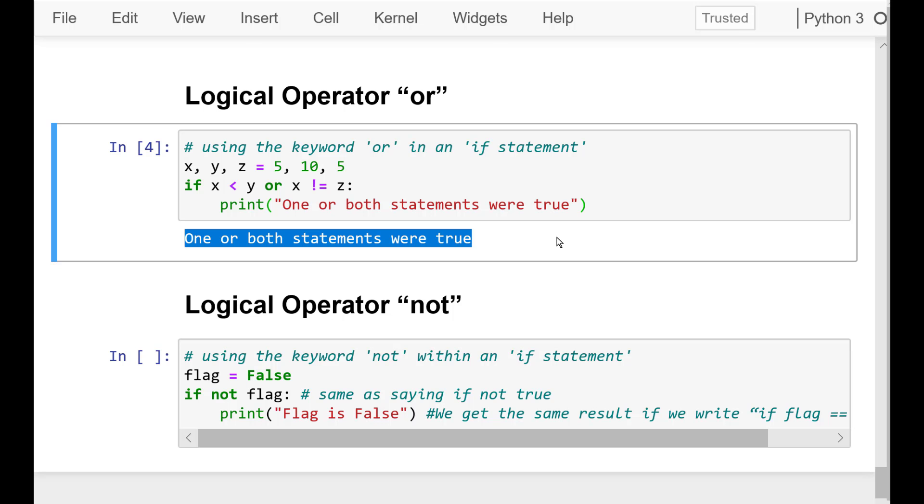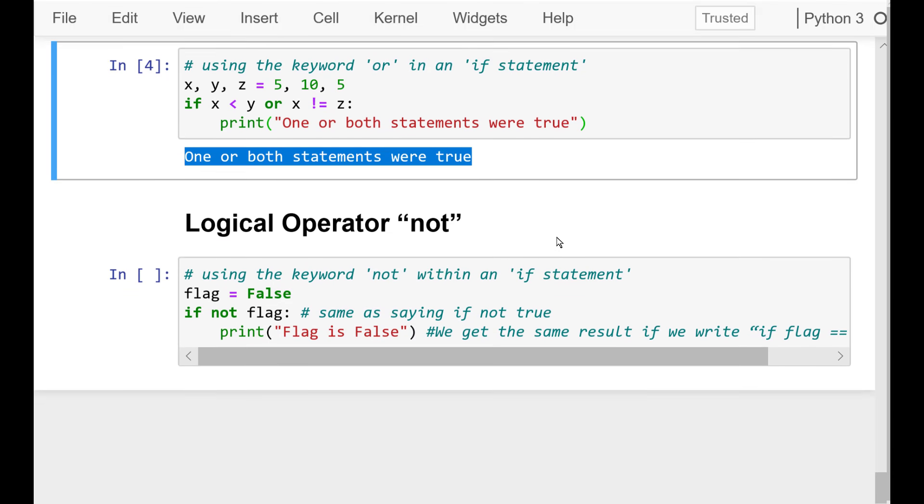The next logical operator is NOT. In certain instances, you'll want to check for the opposite of a value. The NOT operator is used for just that. It essentially returns the opposite of whatever the current value is. So, let's try it out.